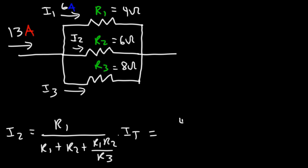R1 is 4, and then R1 plus R2, that's 4 plus 6. R1 times R2, that's 4 times 6. R3 is 8, and the total current is still 13.